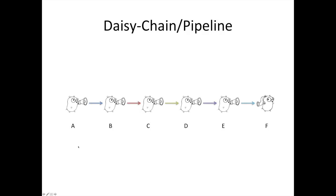Here's an example: there's a goroutine A that starts, produces something, and puts it on a channel. That becomes the input for another goroutine B, which takes it, manipulates it, and puts it out on another channel, and so on. At the end, the last one gets it, prints it out or does the final touches. A is the start and F is the end.